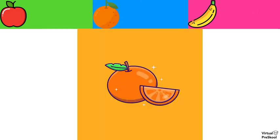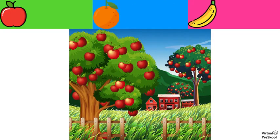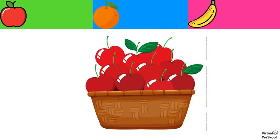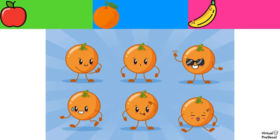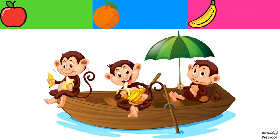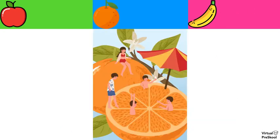What is orange again? Santara. What is banana? Kela. What is apple again? Seib. And what is orange again? Santara. What is banana? Kela. What is banana one more time? Kela. And what is orange? Santara.